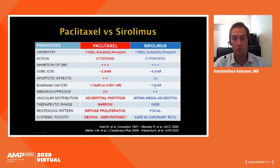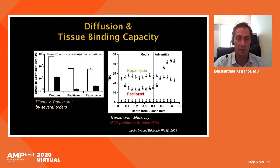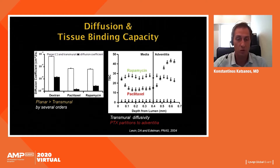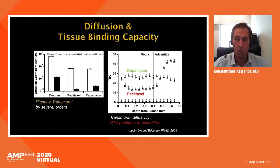There are also differences in distribution and therapeutic range. The coefficient of diffusion along the long axis of the vessel — planar — and across vessel layers — transmural — differs between the two agents. In both cases, planar diffusion is much easier. Paclitaxel has a very low transmural coefficient compared to sirolimus.